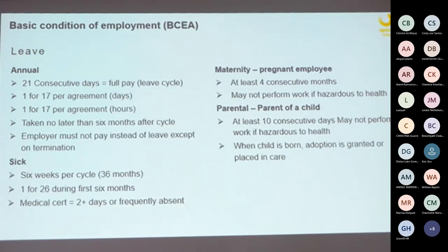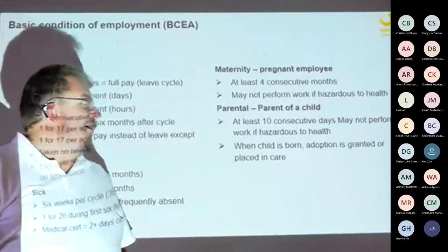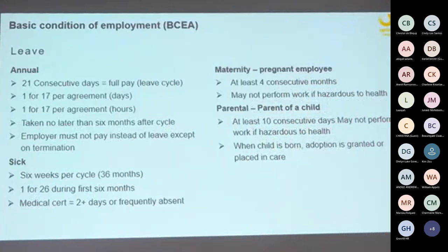Then there is unpaid leave. According to the law, these are not required to be paid, but many employers pay them out of empathy. The first type is maternity leave — for pregnant women. You need to have at least four consecutive months of maternity leave, which is unpaid, but you can claim from the Unemployment Insurance Fund (UIF). You may not perform any work hazardous to your health during maternity leave.